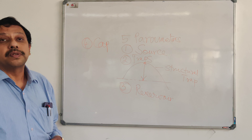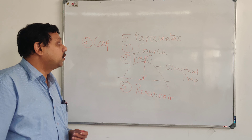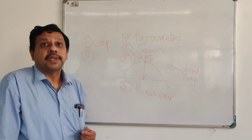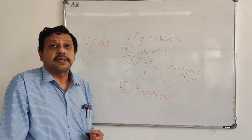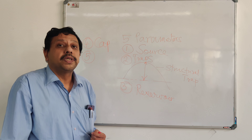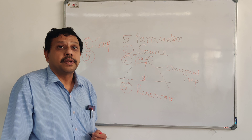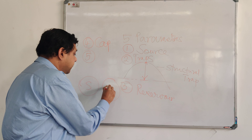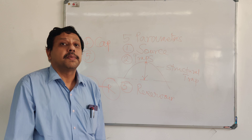The source is the kitchen where the hydrocarbon is generated, so there should be a pathway which connects the source to the trap. This connection of pathway is known as migration. The migration can be short distance or long distance. Through these faults, which are conduits, hydrocarbon migrates from the source, and this connection happens through faults which are known as the migration pathway.